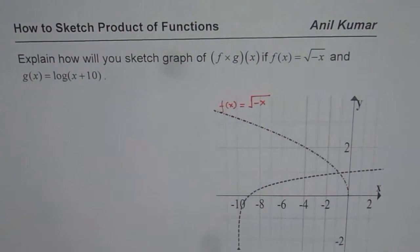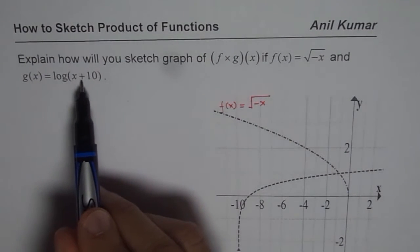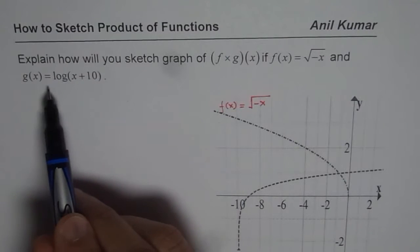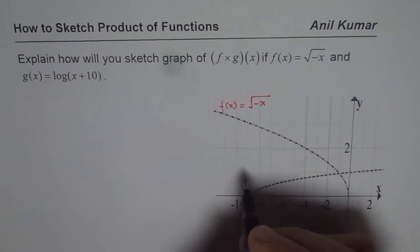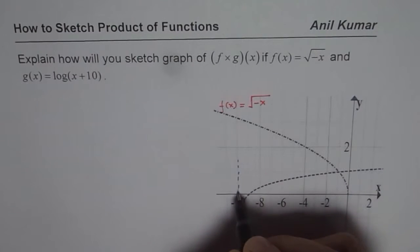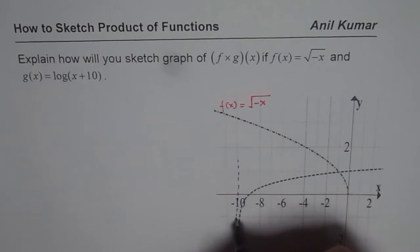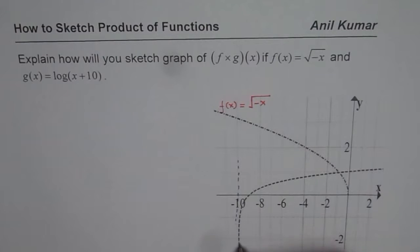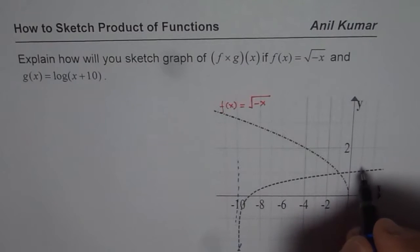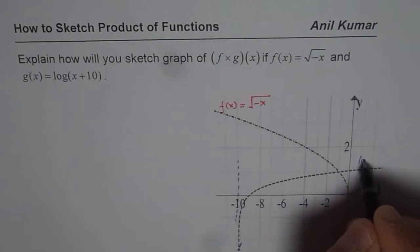The other graph we have is the graph of log of x plus 10, which means the log x graph has been translated 10 units to the left. So we have a vertical asymptote here, and the function approaches minus infinity as the x value approaches minus 10. So this is the graph of log of x plus 10.